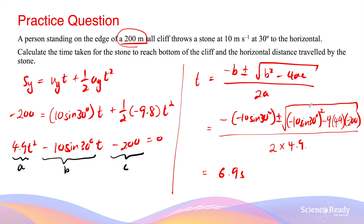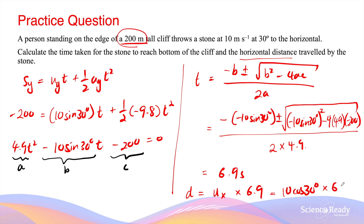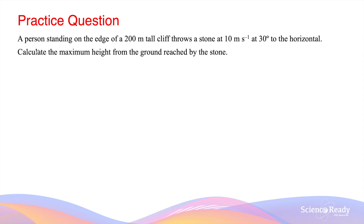When using a quadratic equation to find time of flight, we always take the positive answer. Once we have the time of flight, we can find the horizontal distance: d = ux × t = 10·cos30° × 6.9, which gives a horizontal distance of approximately 60 meters.